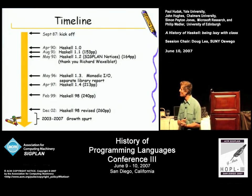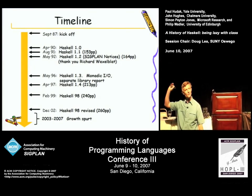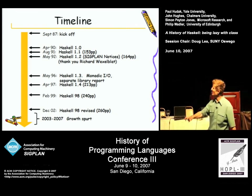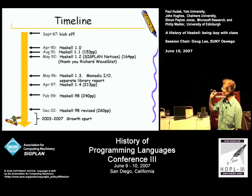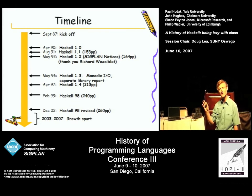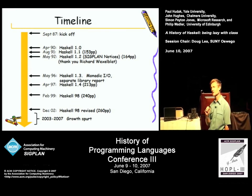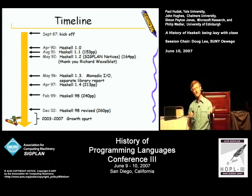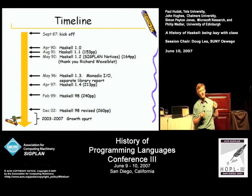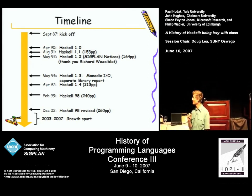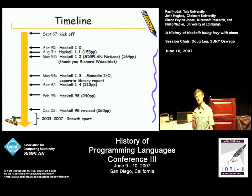So here we are — we've now reached May 1992. The third iteration of the Haskell report is published in SIGPLAN Notices. This was a big step for us, a kind of step towards respectability. It was a really big issue of SIGPLAN Notices. So we give a big thank you to SIGPLAN and to Richard Wexelblatt in particular for allowing this to happen.